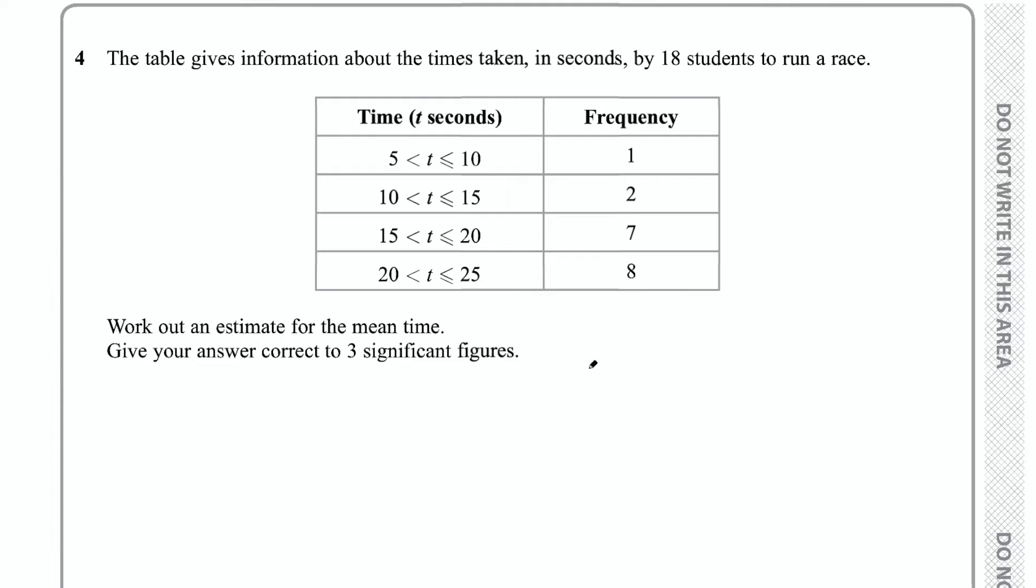In this video we're going to look at how to find the estimated mean from a frequency table. Here we have a frequency table. The question says the table gives information about the times taken in seconds by 18 students to run a race. Work out an estimate for the mean time. Give your answer correct to three significant figures.